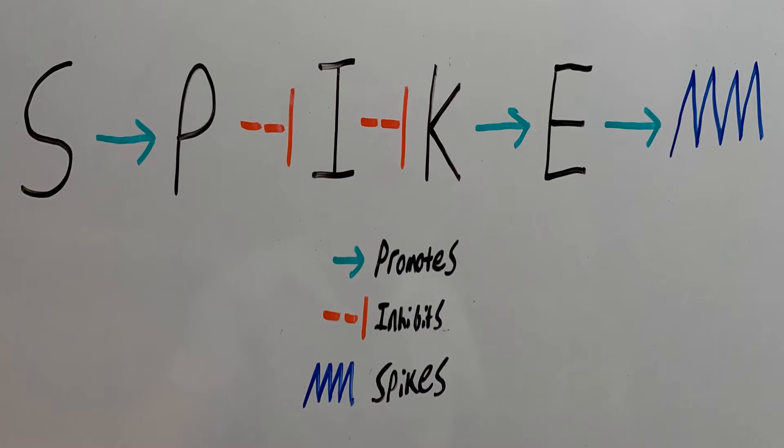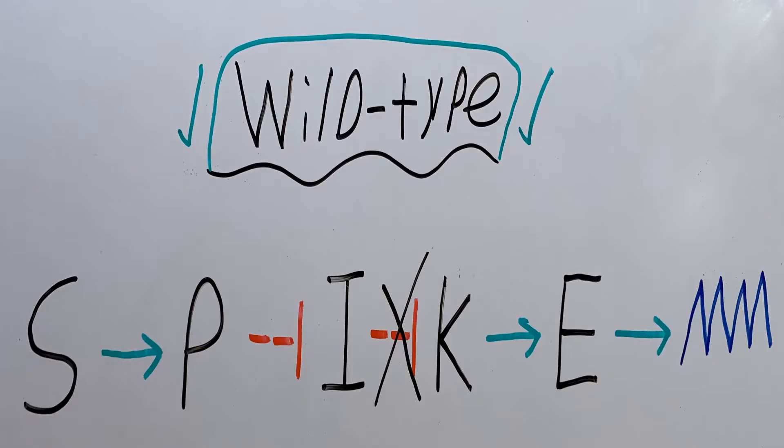To start, the green arrow means to promote, the red symbol means to inhibit, and the blue spikes represent the formation of spikes on the thorny dragon. The first strain I will go into is the wild type strain.